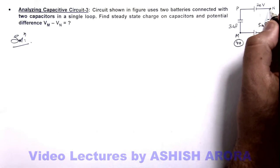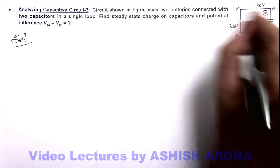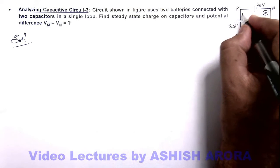On the other side of this battery, potential is taken as x. On this side, potential will be taken as x plus 20.